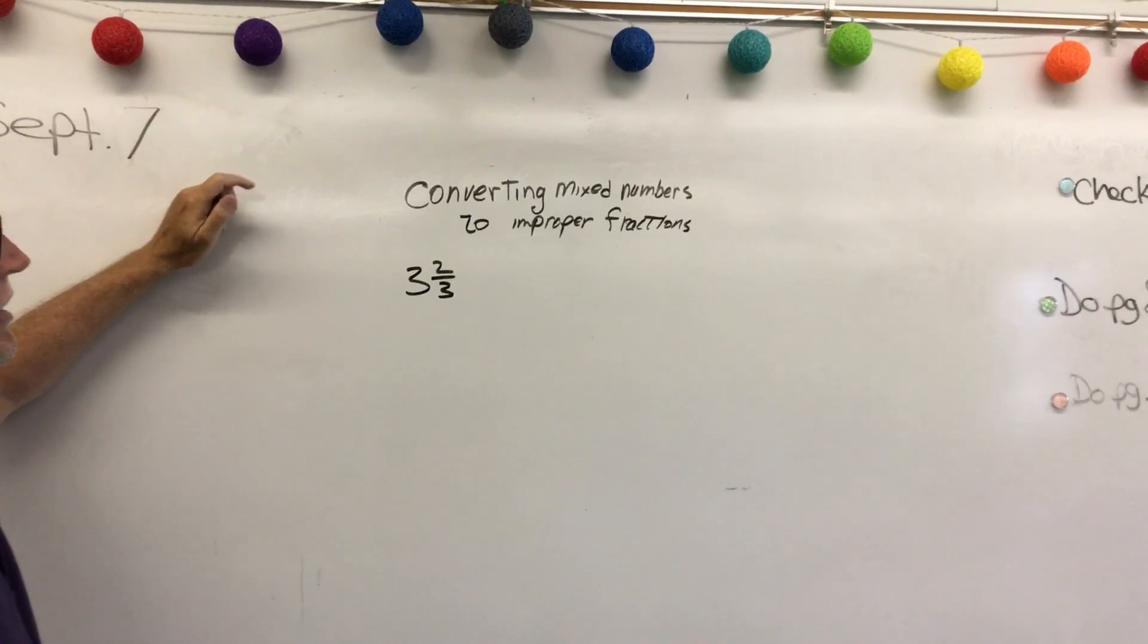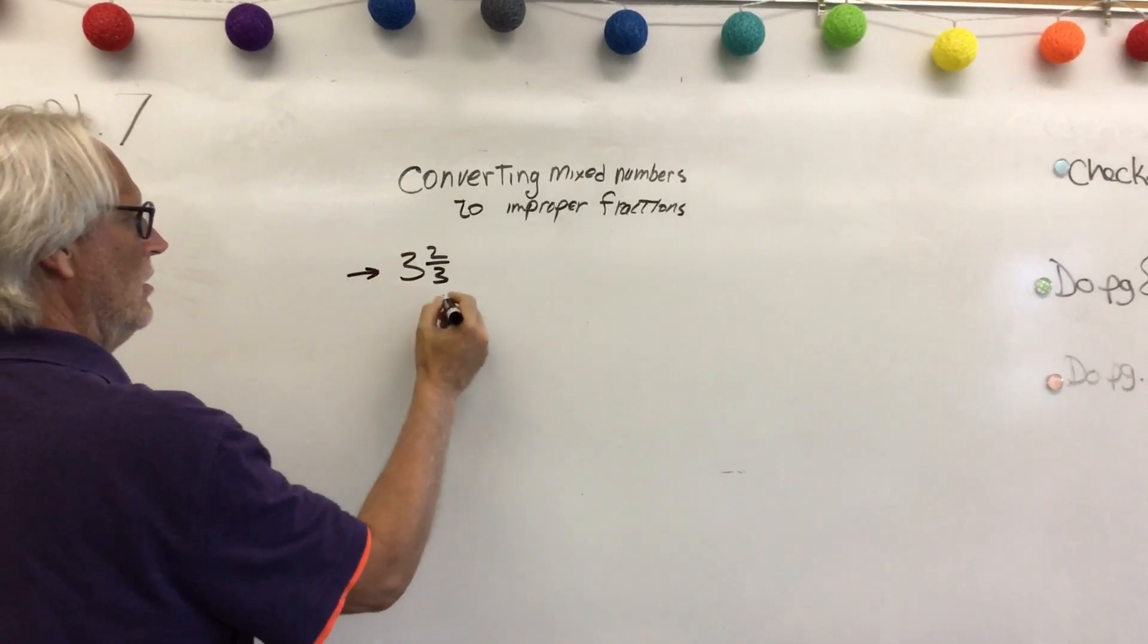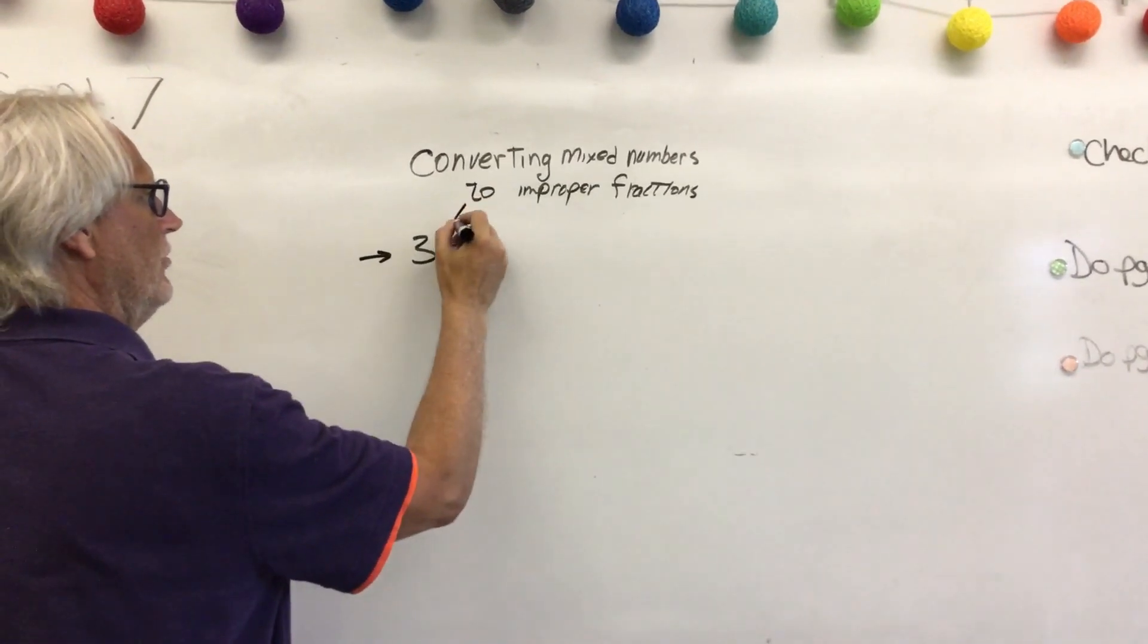So the first thing we're going to do is identify our parts of our mixed numbers. So this is my whole number, this is my denominator, and this is my numerator.